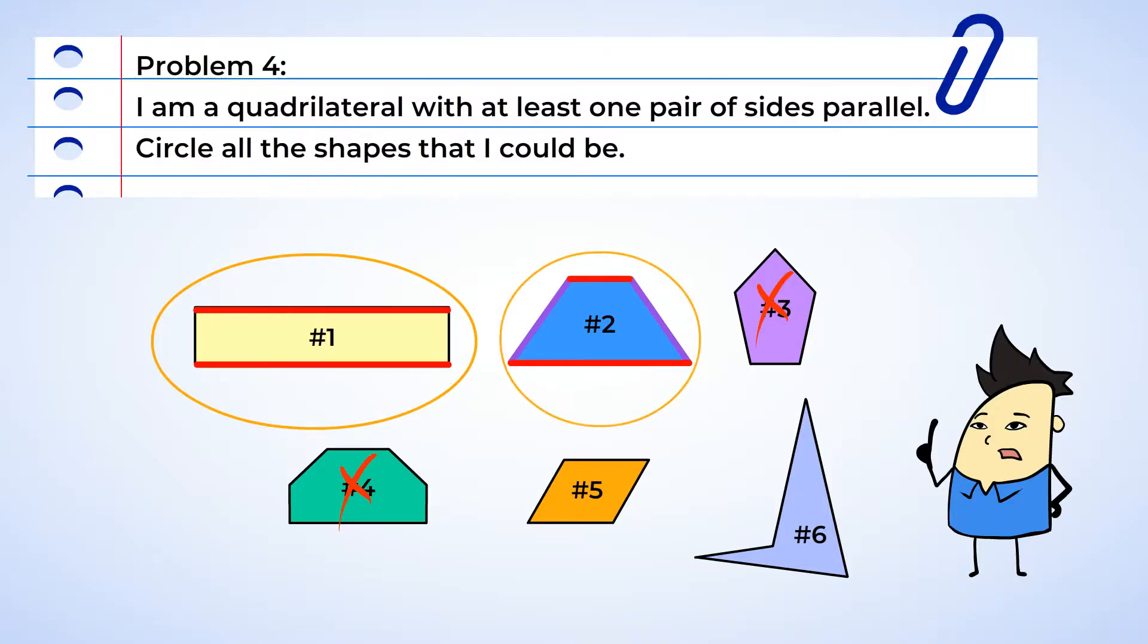Shape number 5 has both pairs of opposite sides parallel too. Let's circle it. And now for shape number 6. Even though it has four sides, all of the pairs of sides are slanted and seem to cross each other. There are no parallel sides for shape number 6 at all. So that means we cross it off.